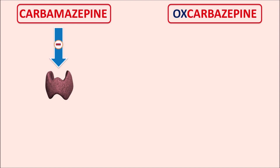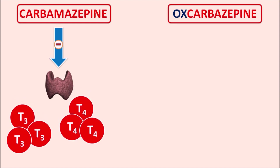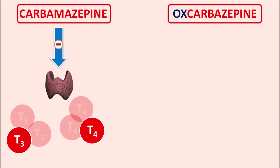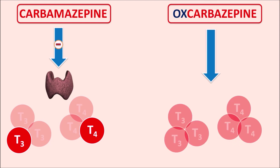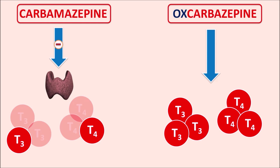Carbamazepine can inhibit hormonal activity such as thyroid hormone activity. When this drug is administered, we can observe decreased levels of thyroid hormones T3 and T4. On the other hand, oxcarbazepine does not have this effect — instead it tends to increase thyroid hormone levels. This is one important difference between oxcarbazepine and carbamazepine.